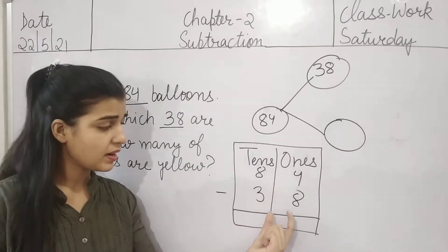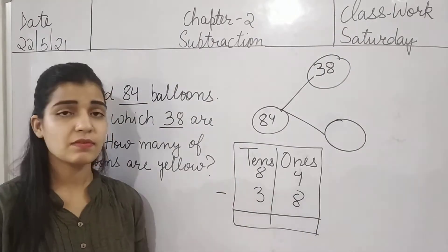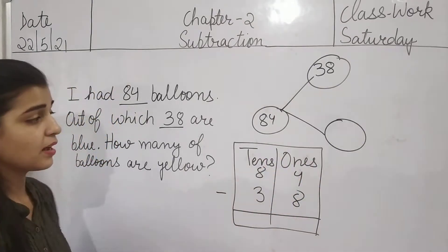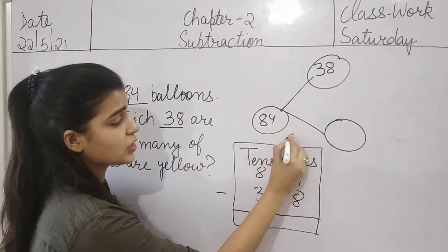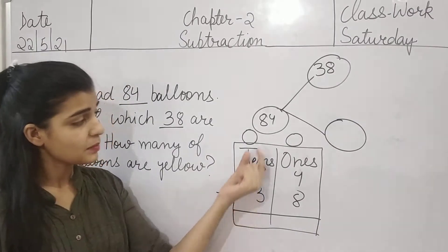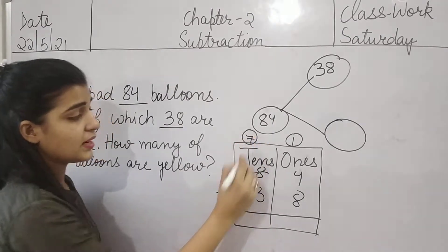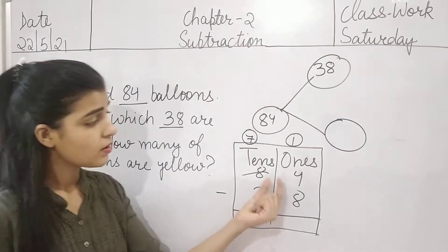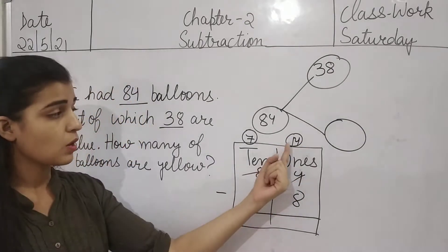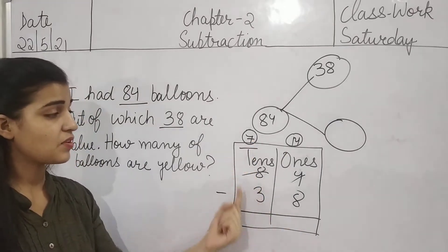Now 4 is the smaller number and 8 is the bigger number. So we will take one carry from tens — tens mein se hum ek carry lenge. So agar ham ne tens mein se carry liya, I have no space, so main yahan chote se circle bana leti — only for understanding. 8 mein se hum yahan one carry lete hain, so 7 is left in tens and 10 comes here. Now we will write 4 here. So now this is a new number — 14 minus 8 and 7 minus 3.